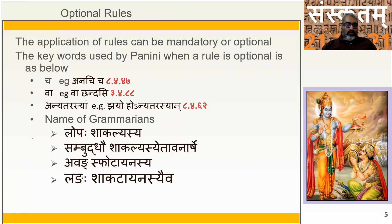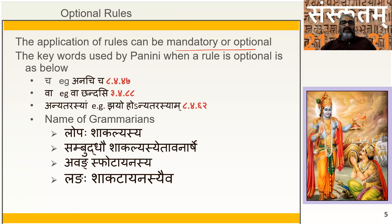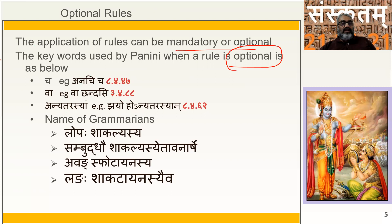A new concept to introduce here is the concept of optional rules. Certain Vidi rules can be mandatory or optional. How do you identify whether a Sutra is optional? There are four keywords. The first keyword is the word 'cha' — for example, the Sutra 'Anachi cha.' When the word cha comes in a Sutra, in certain cases the rule itself is optional.